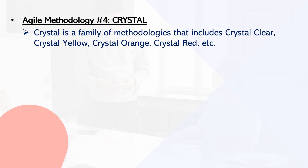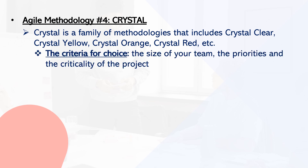Framework number four: Crystal. Crystal is a family of agile methodologies that includes Crystal Clear, Crystal Yellow, Crystal Orange, Crystal Red, and others. Each has a unique structure distinguished by variables including system criticality, team size, and project priorities. Your choice among Crystal methodologies depends on several project factors such as team size, priorities, and project criticality.